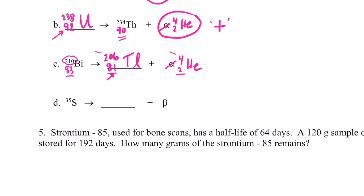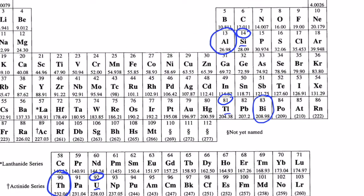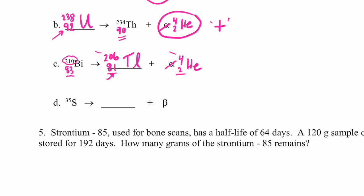Alright, the last example here. Looks like sulfur-35 gives off a beta particle. Let's look up sulfur's atomic number. Looks like it's 16 kiddos. So it has 16 protons.